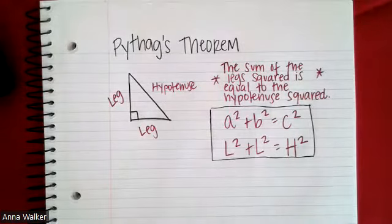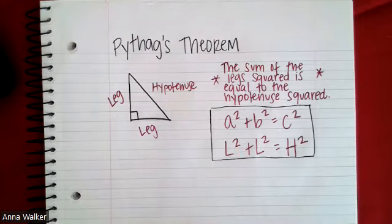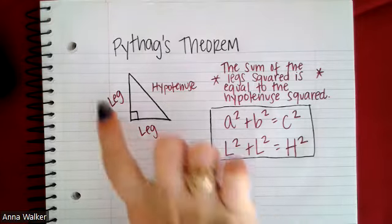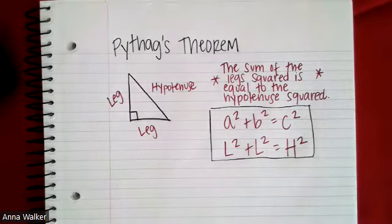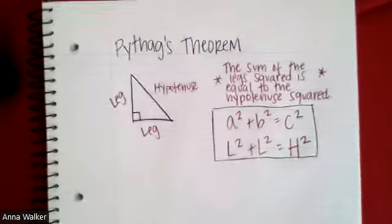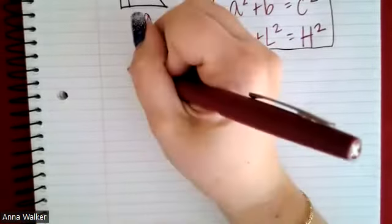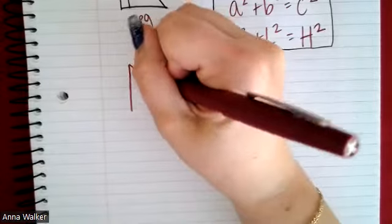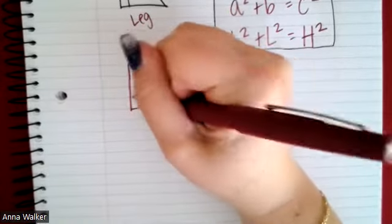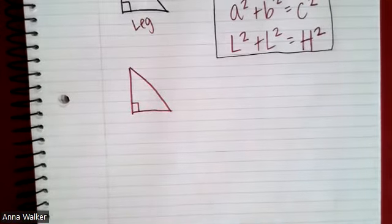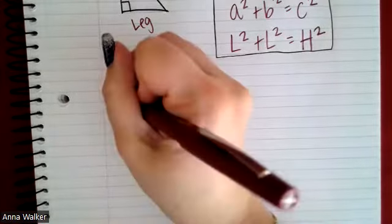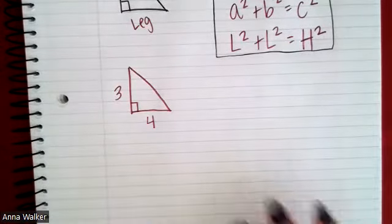Sometimes a question will ask you to find one of the legs, and sometimes it will ask you to find the hypotenuse. We're going to do a couple of examples of each. Let's start with a right triangle — drawn this way — where the legs are 3 and 4 and the hypotenuse is 5.